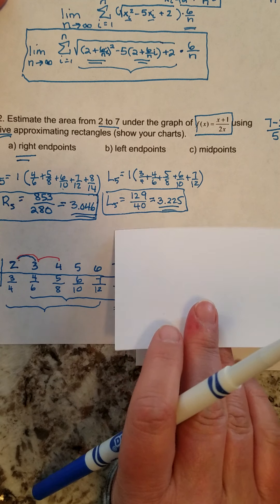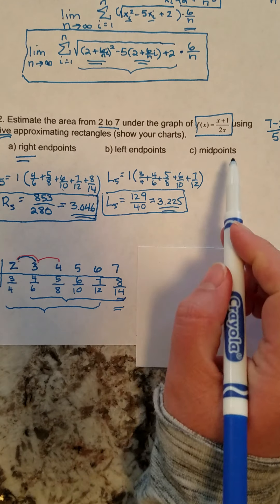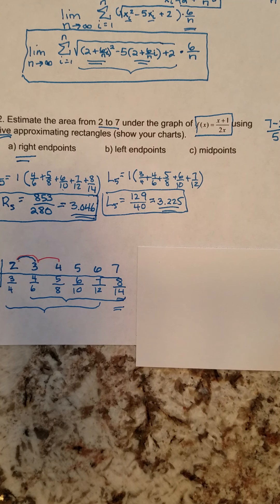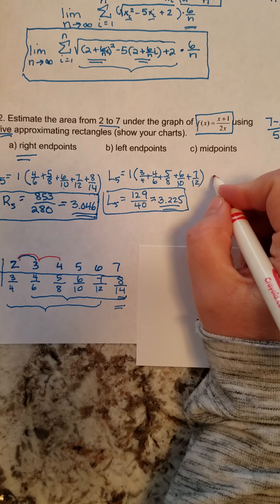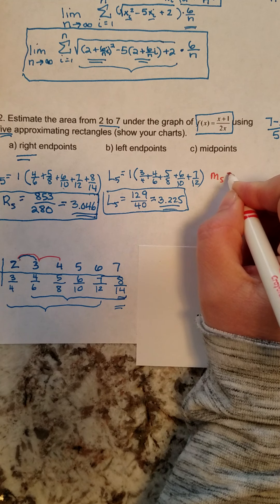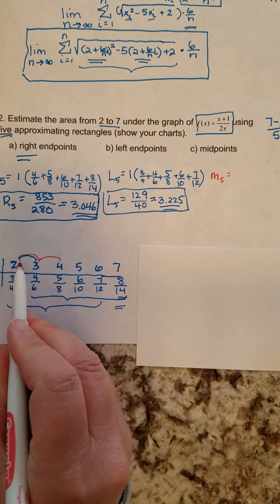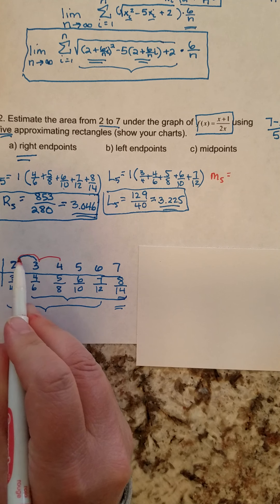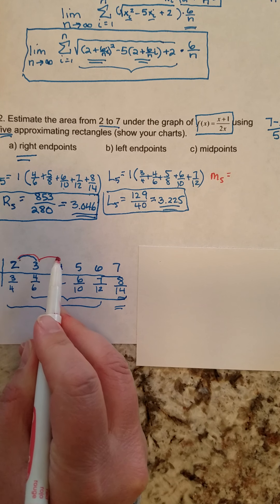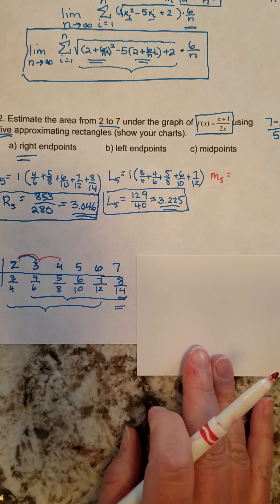Alright, moving on then to the midpoints. I'm going to switch colors because I'm not using the same chart. I need to make sure, in order to find M sub 5, that I choose numbers between all of these. So between 2 and 3 is 2.5, between 3 and 4 is 3.5, etc.